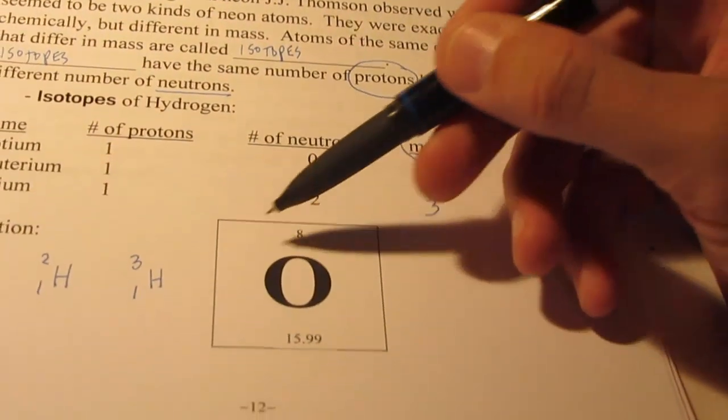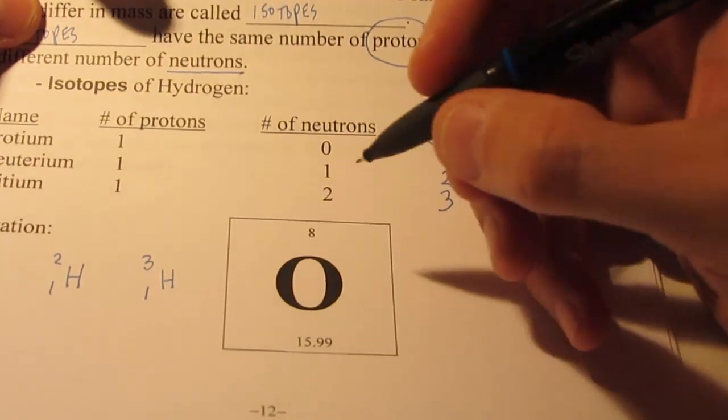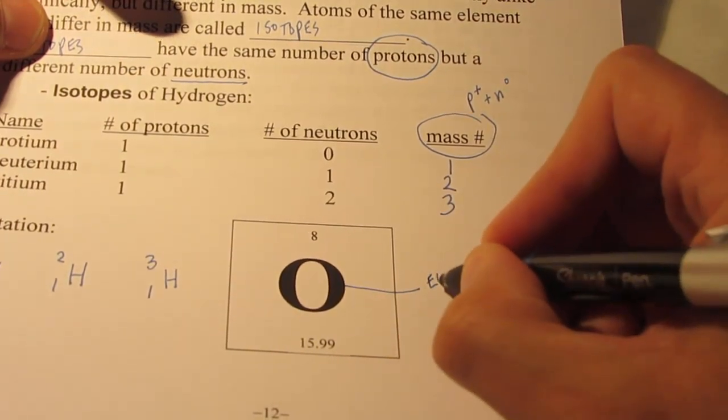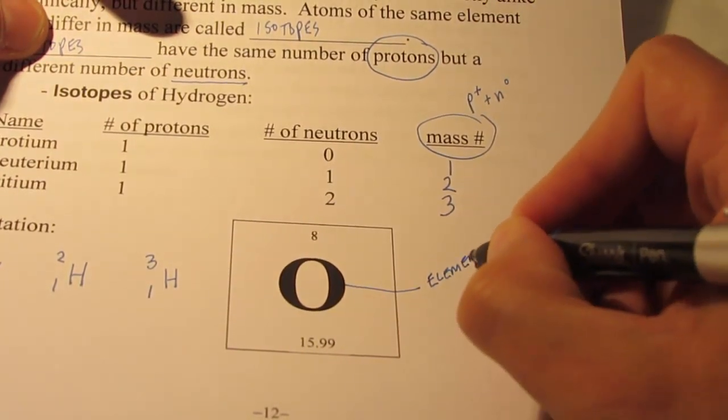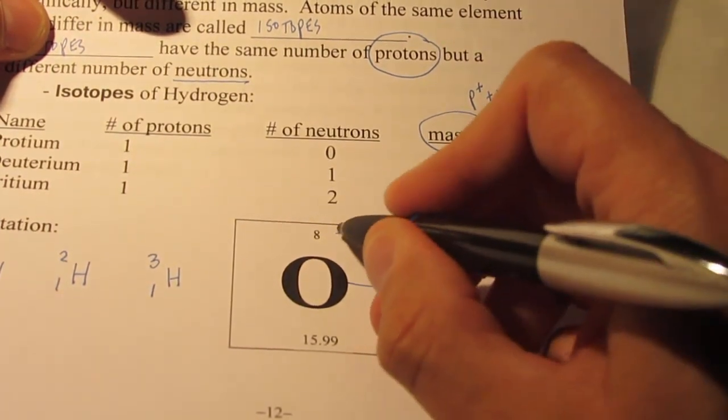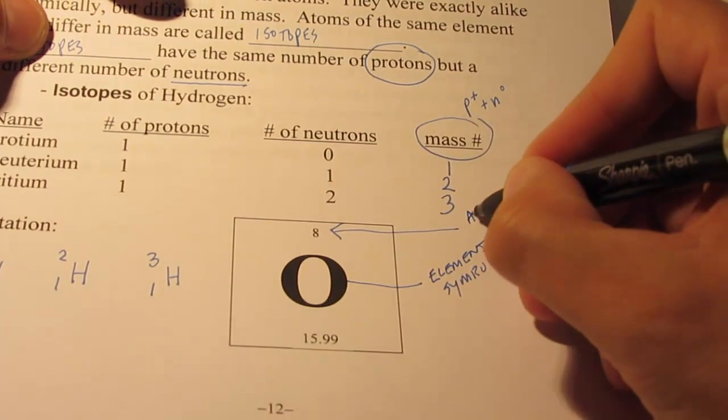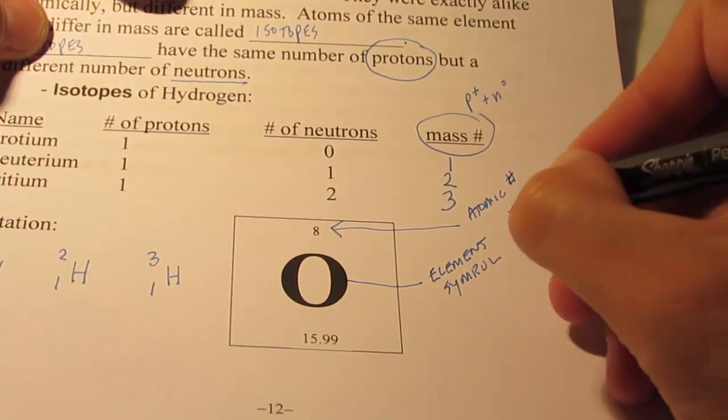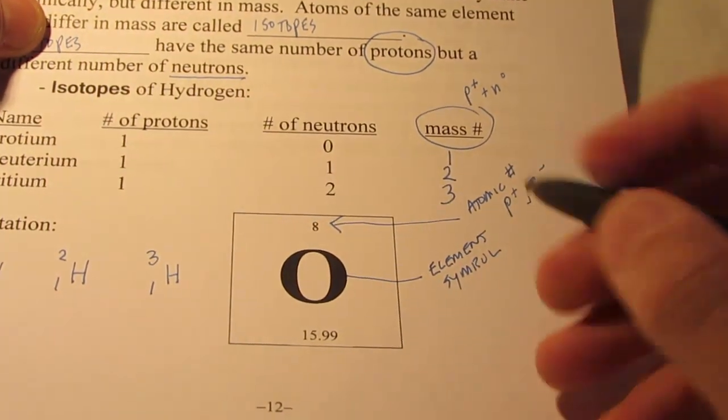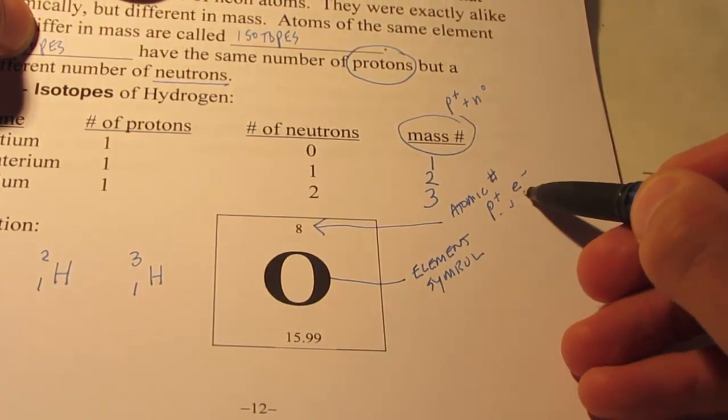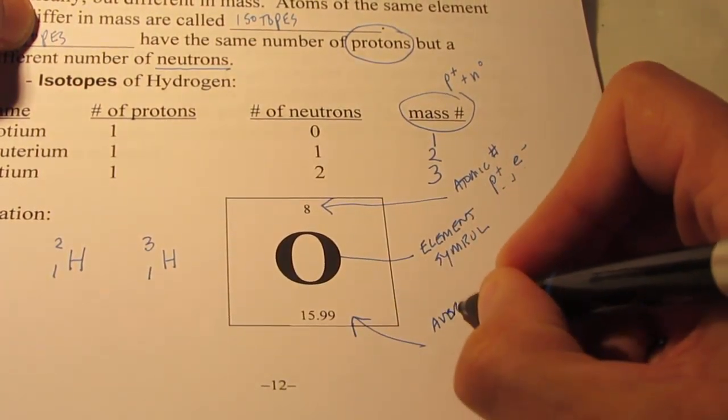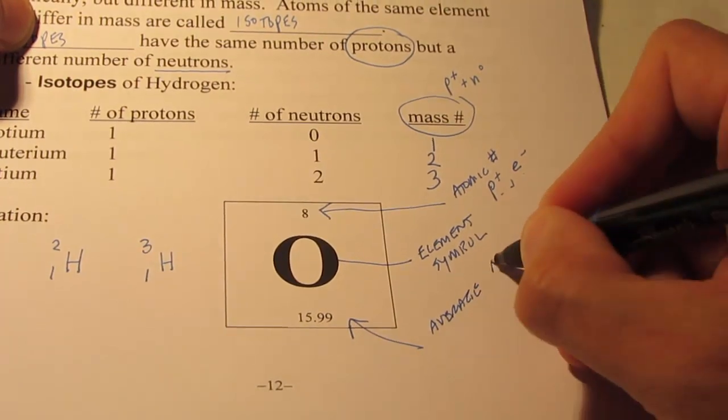We might also see this on the periodic table. We have the symbol for an element, the element symbol which you already know. The integer number is the atomic number, which is the number of protons or the number of electrons. In a neutral atom, protons and electrons are the same. This number here is the average atomic mass.